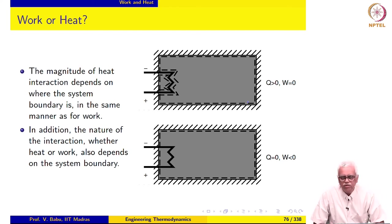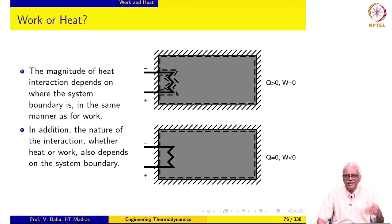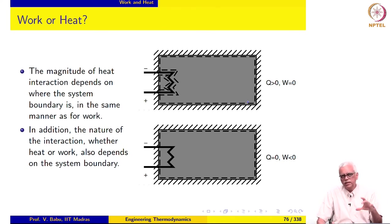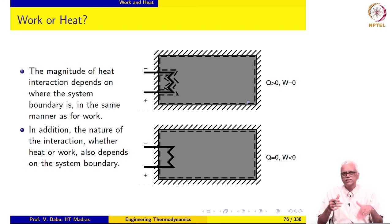Depending on where we draw the system boundary, an interaction may be classified as a heat interaction or a work interaction. We have insisted on the location of the system boundary because both heat and work are interactions of the system with the surroundings. The magnitude and sign of work depends on where we draw the system boundary, and depending on where we draw the boundary, something may be classified as a heat interaction or as a work interaction.